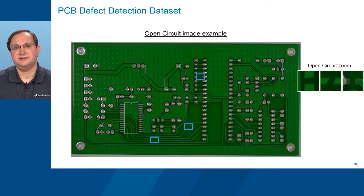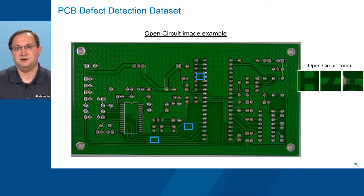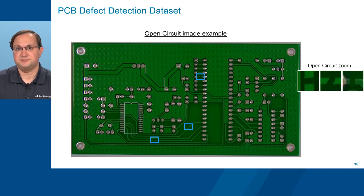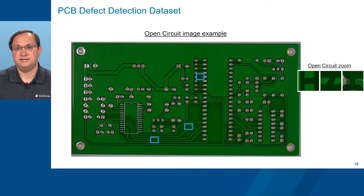The dataset's third defect class is open circuit, in which the electrical connection between circuit elements on the PCB has been cut off, thereby left open. This can be regarded as a more extreme version of a mousebite, in which the trace is completely severed, and several examples of open-circuit ROIs are annotated in blue.